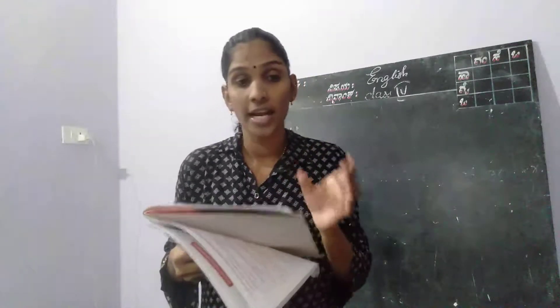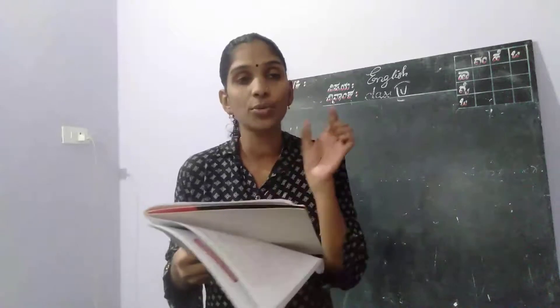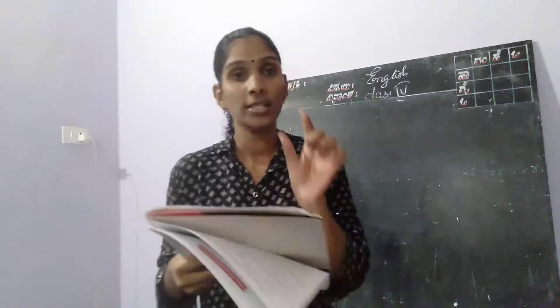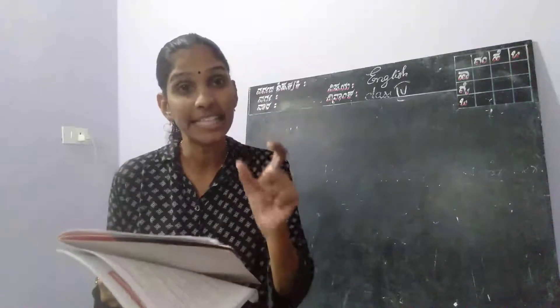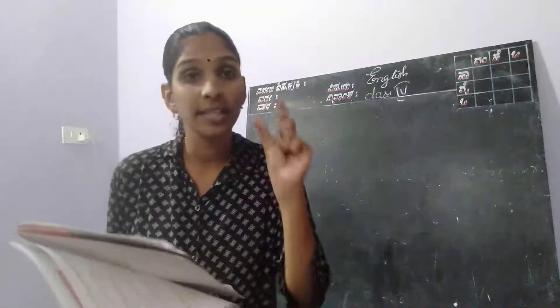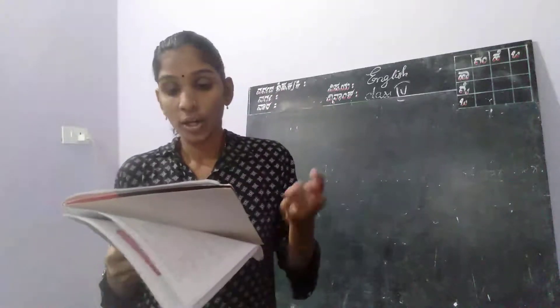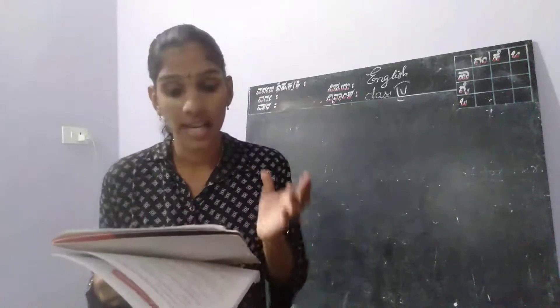You cannot feed the bread to the birds, and the bread is stale. Instead of 'bread' we have to use the objective pronoun 'it'. Bread is a thing, so we can use 'it'. You cannot feed the bread to the birds as it is stale.